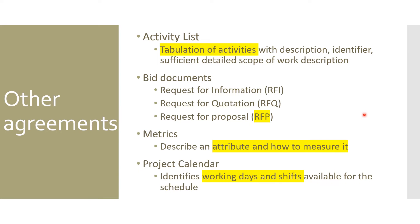The activity list is another type of artifact — a tabulation of activities with descriptions, identifiers, and sufficient details about the work. It helps the project team understand the type of activity and what it is demanding, so the team can execute it.